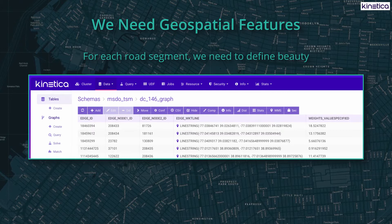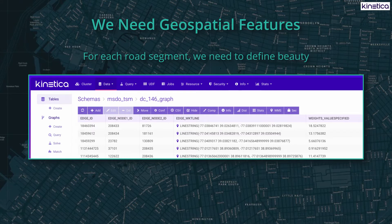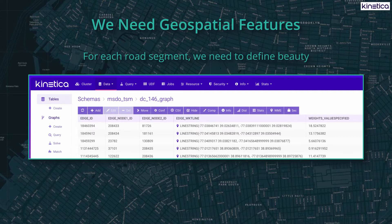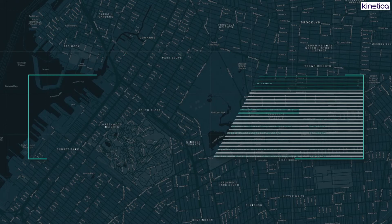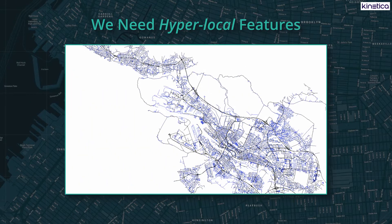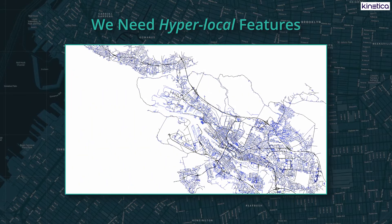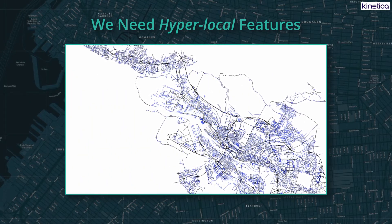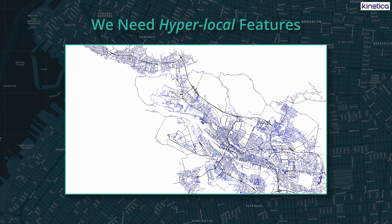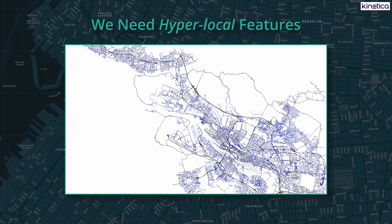Imagine we do something more interesting with these restrictions and weights. Then we can overweight based on beauty or safety, or theoretically any feature we want. But remember, the features are hyperlocal, so we need to tag each micro-segment of the road network with features for that small segment.